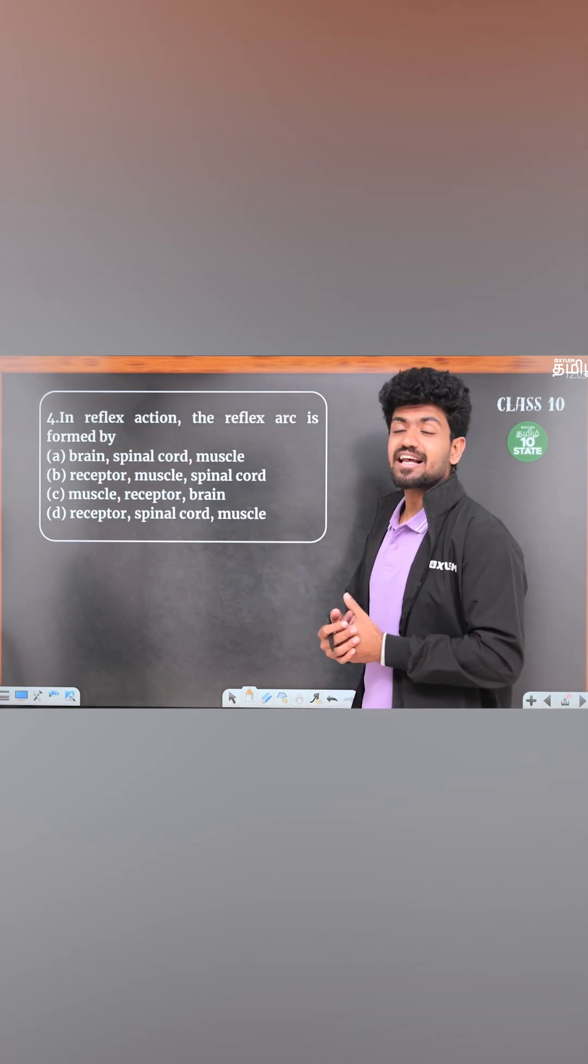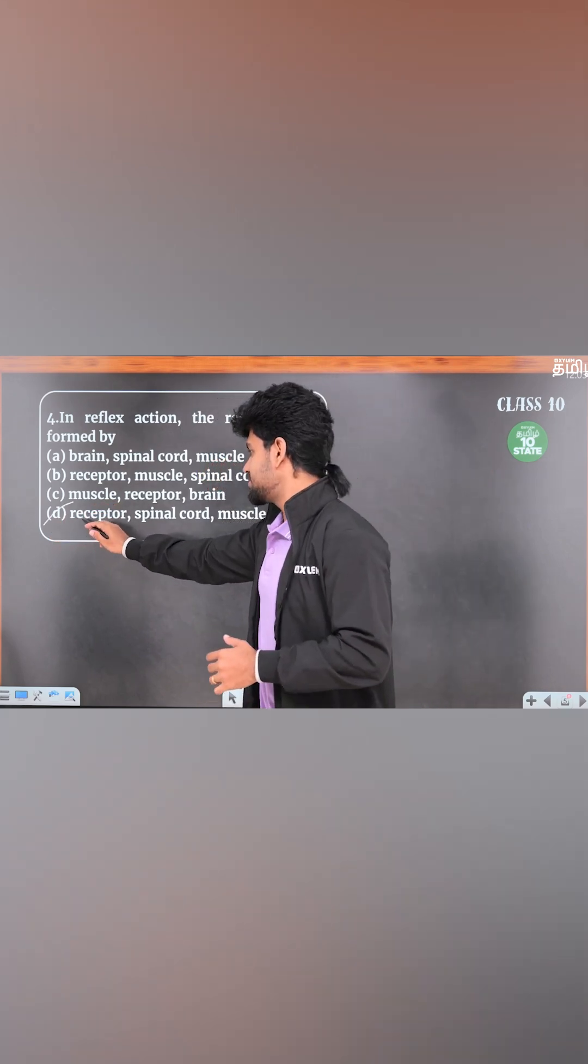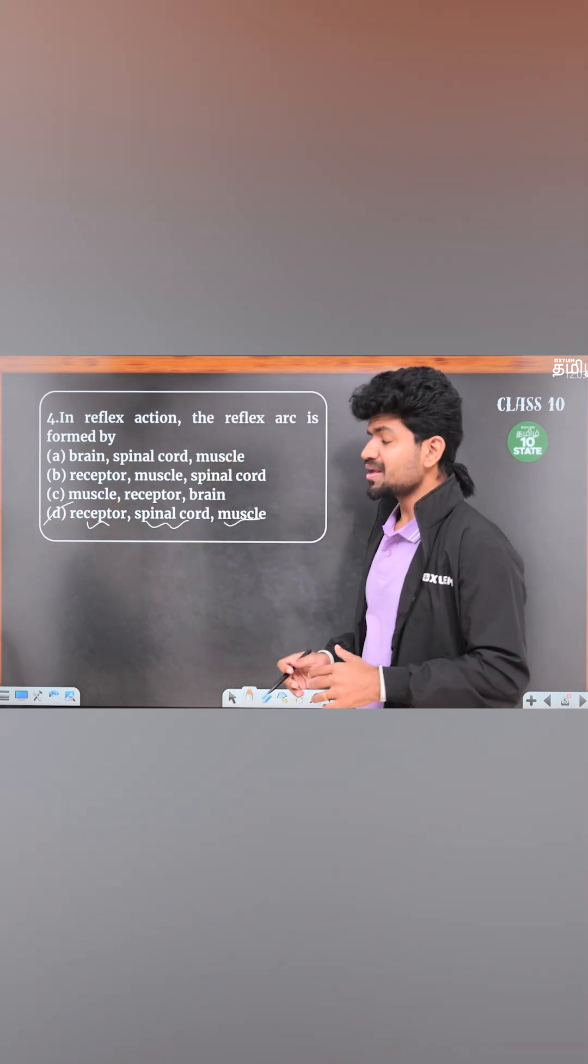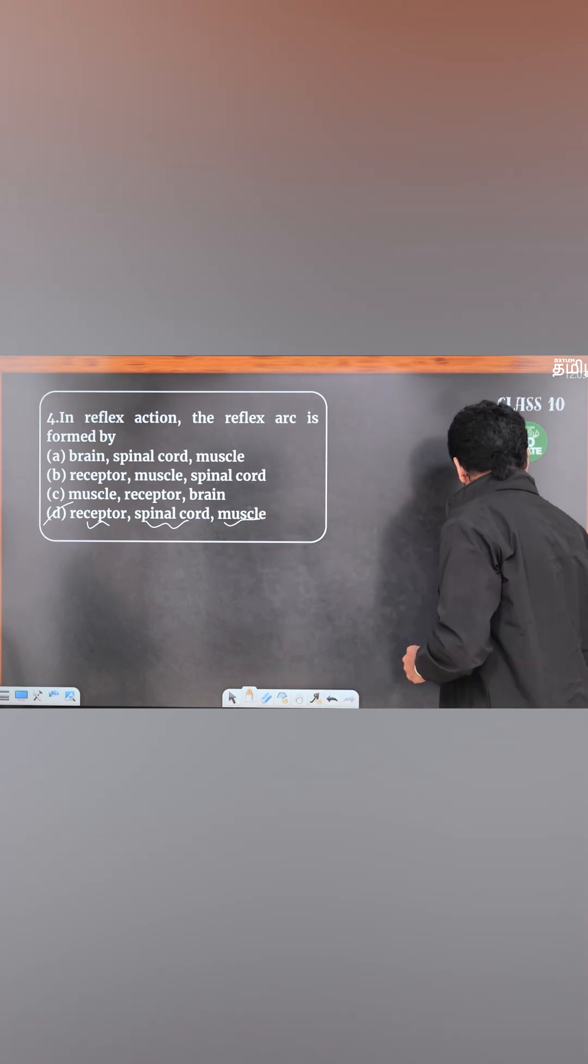In reflex action, the reflex arc is formed by... Very important question. There is a super important concept. Receptor, Spinal Cord, Muscle. If we don't have brain involvement, we can do a reflex. So Receptor, Spinal Cord, Muscle concept.